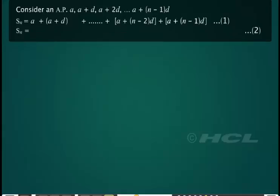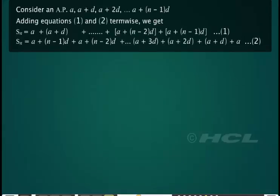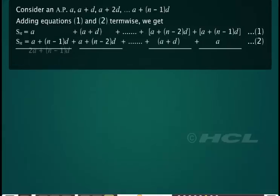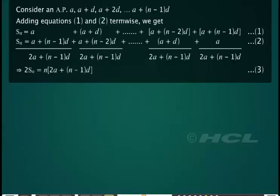The sum Sn can also be written in reverse order as shown in equation 2. Now add equations 1 and 2 term by term; we get the sum as shown. Note that each term in the last row is written as the sum of twice the first term a and n minus 1 times the common difference d. We see that the terms in the last row add up to give equation 3.